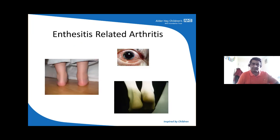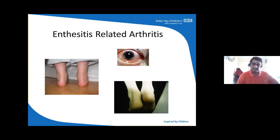Enthesitis-related arthritis involves inflammation of entheses — the area where tendons join with bones. In these pictures you can see Achilles tendon inflammation of the ankle joints in a young child and an older child. Most inflammatory arthritis patients will have associated uveitis; however, enthesitis-related arthritis tends to develop more iritis and scleritis than uveitis.